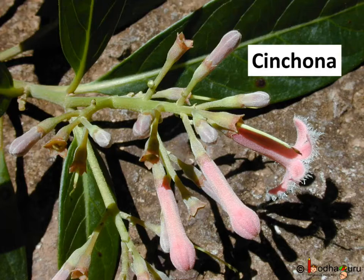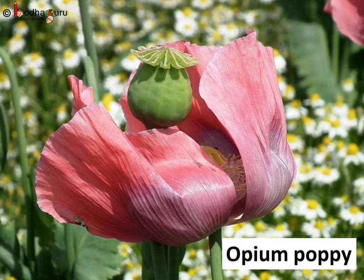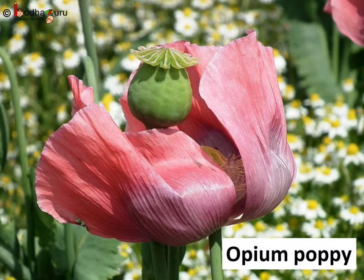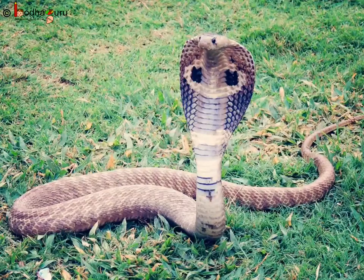For example, we get quinine from the bark of cinchona, which is used for making anti-malarial drugs. Morphine is found in opium. Opium is obtained by drying the latex obtained from the opium poppy.